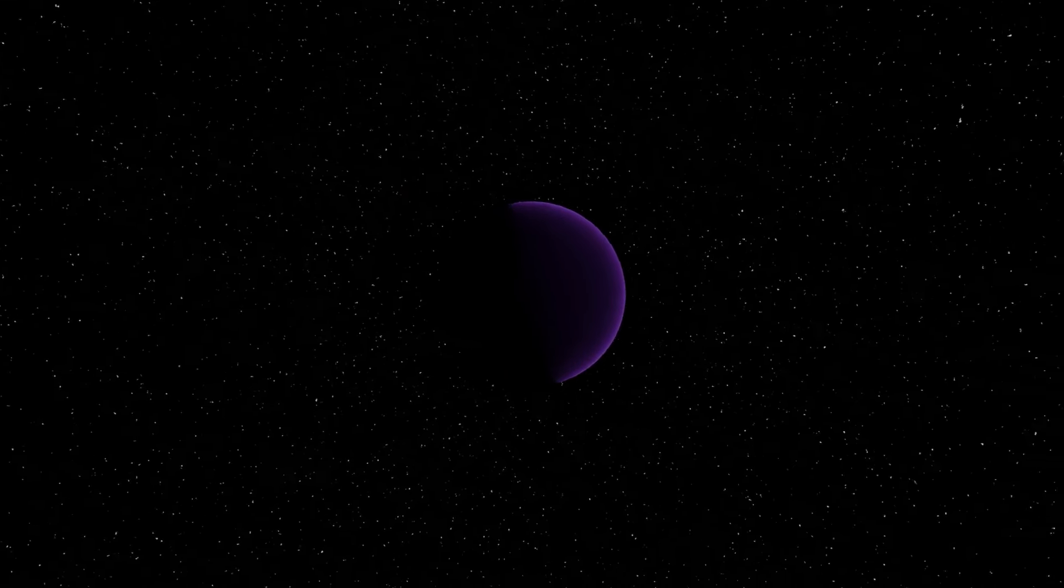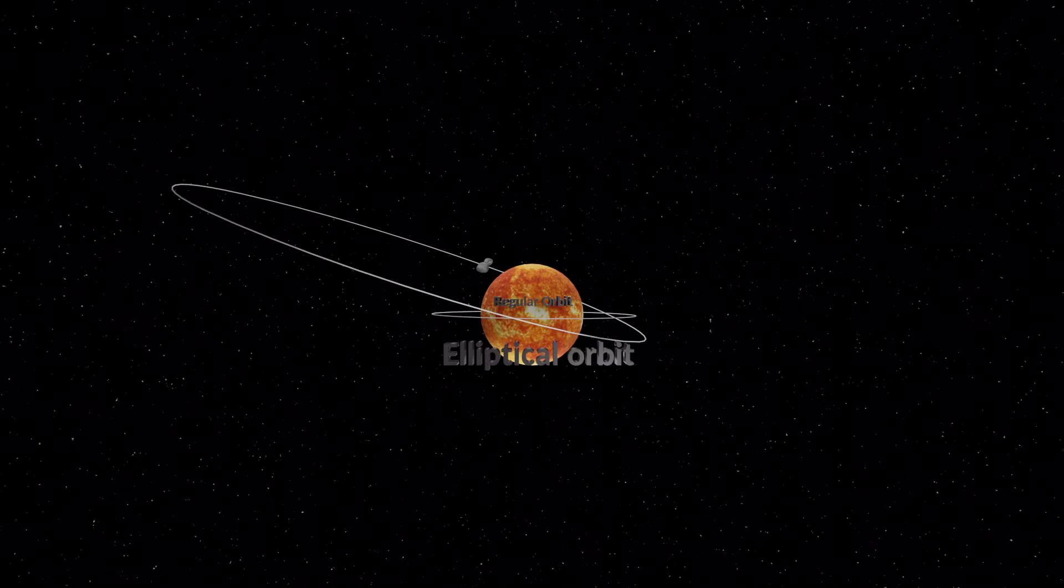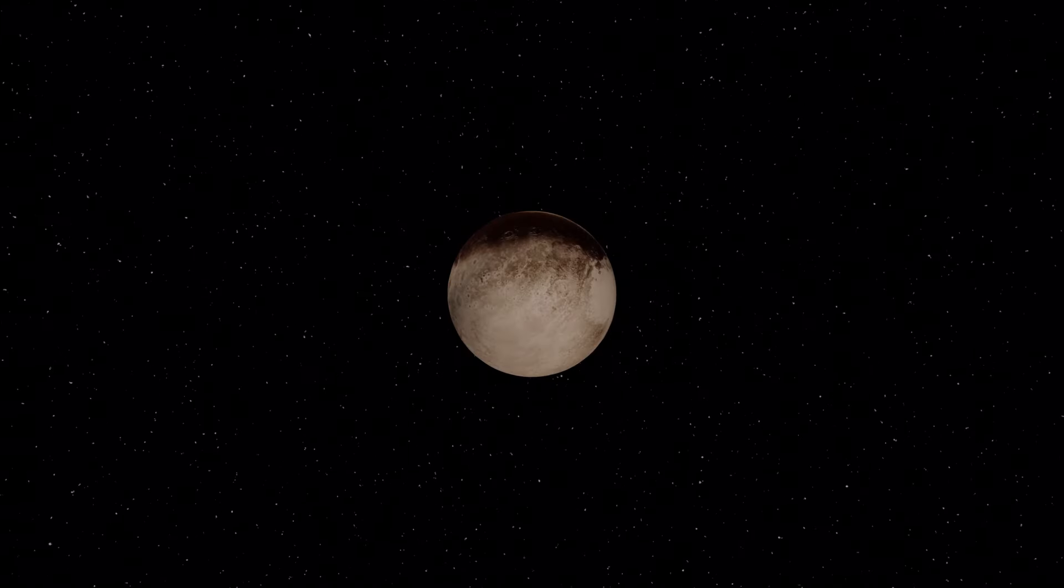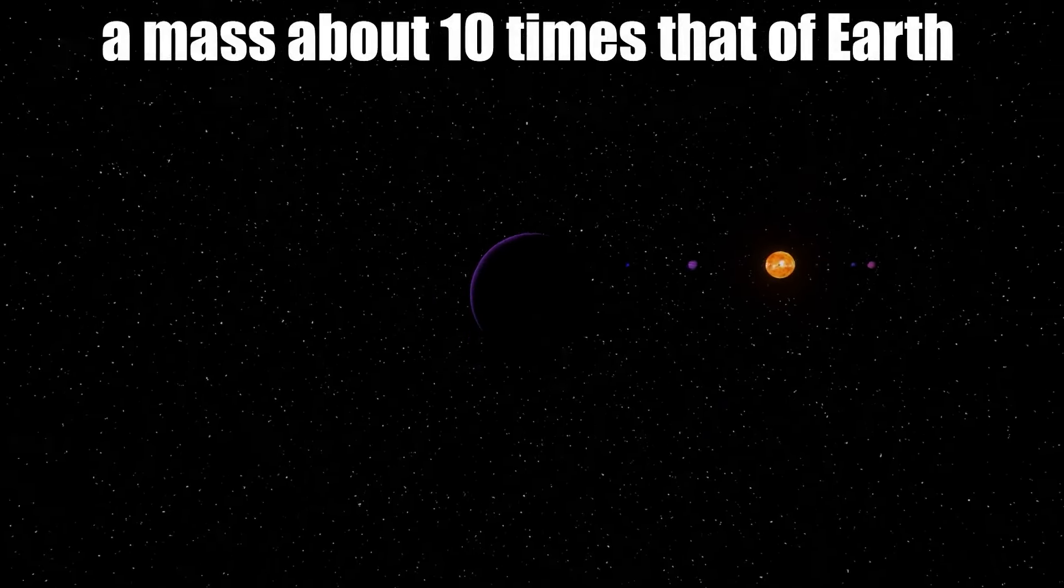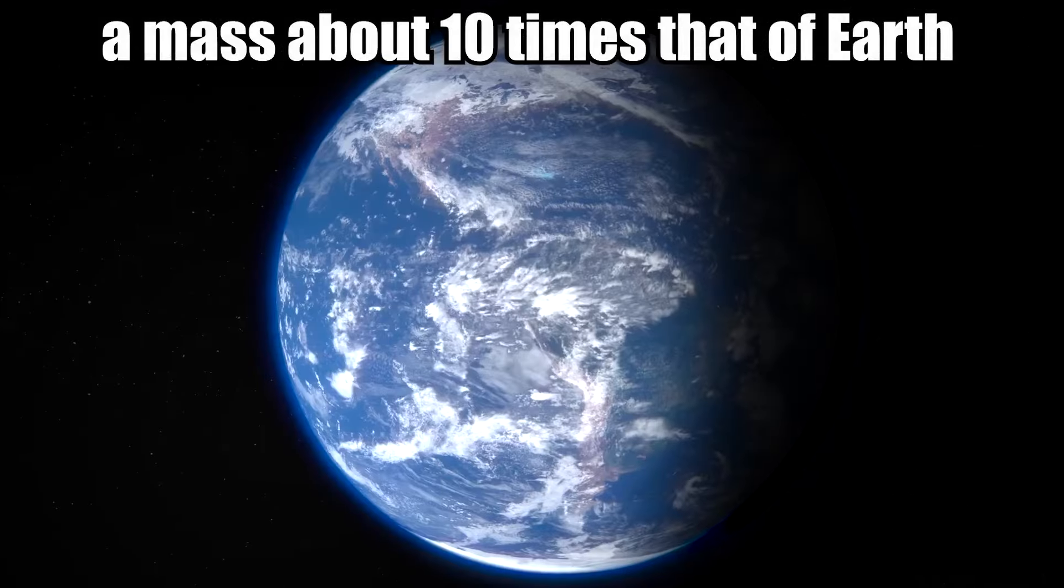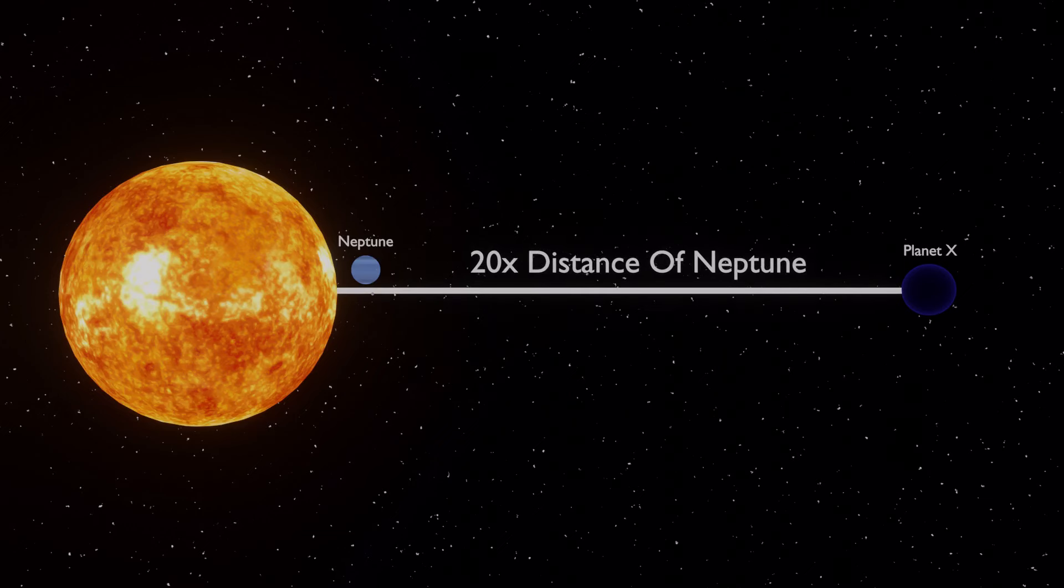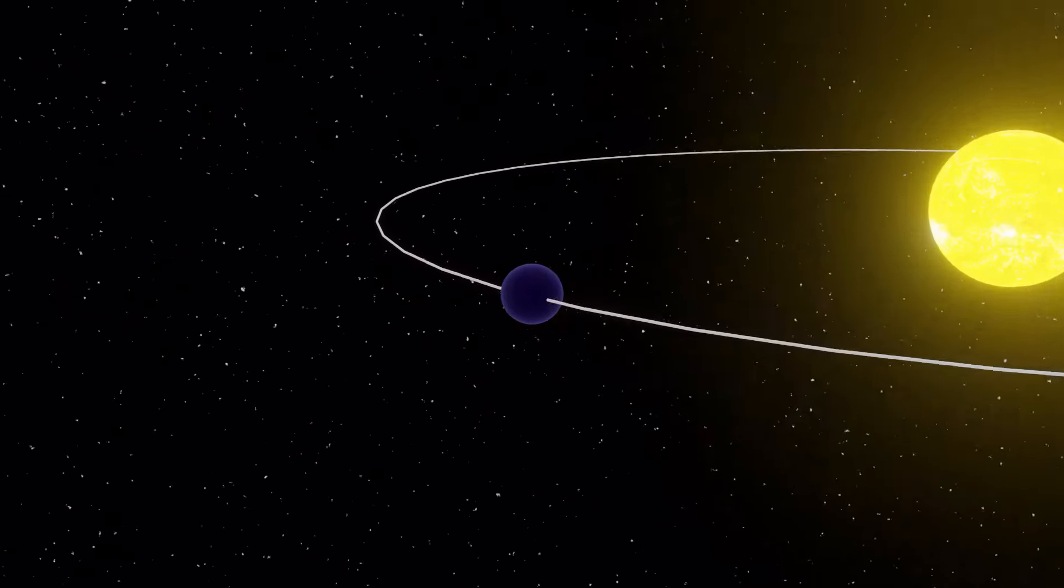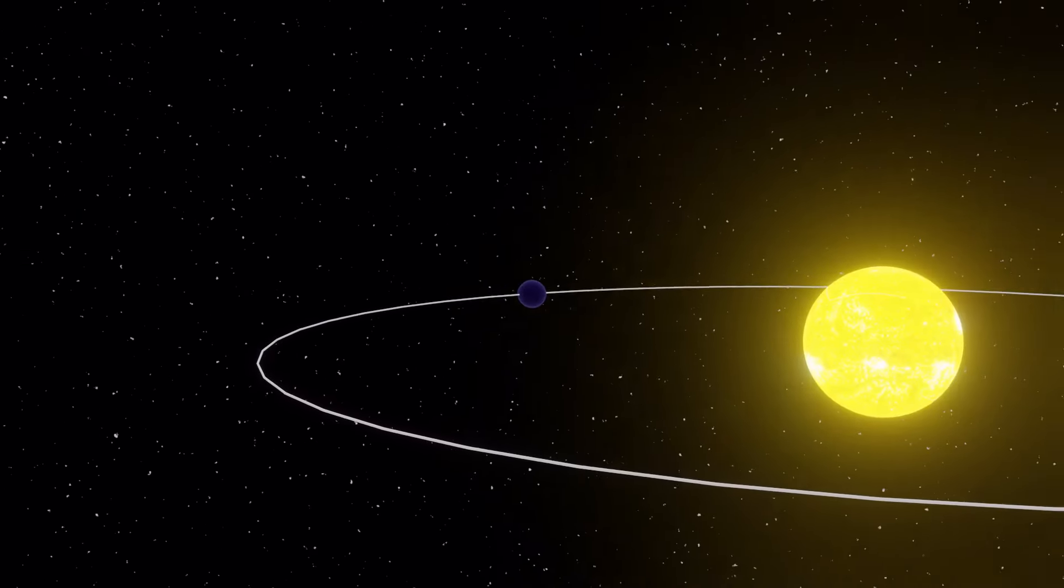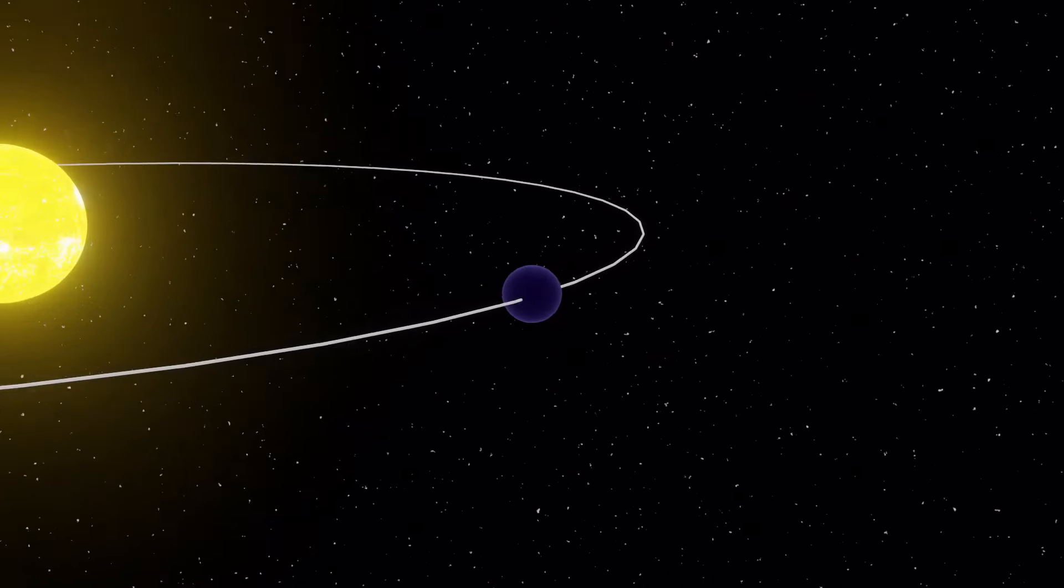This Neptune-sized planet orbits our sun in a highly elongated orbit far beyond Pluto. The object could have a mass about 10 times that of our planet Earth and orbit about 20 times farther from the sun on average than Neptune. It may take between 10,000 and 20,000 Earth years to make one full orbit around the sun.